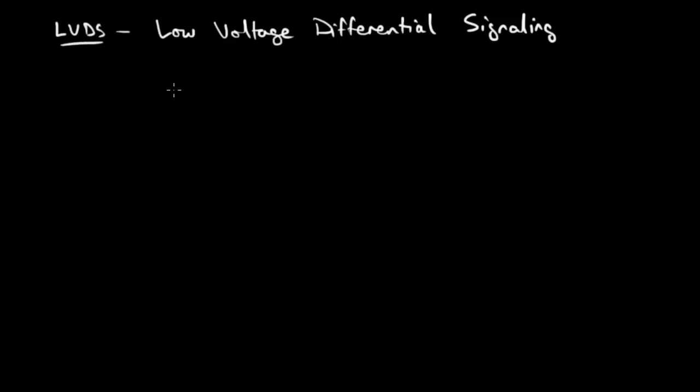LVDS, Low Voltage Differential Signaling. This is pretty common. It is differential signaling, so watch the previous videos if you want to know what that is. This is electrical signaling that can run at very high speeds over a twisted copper pair.